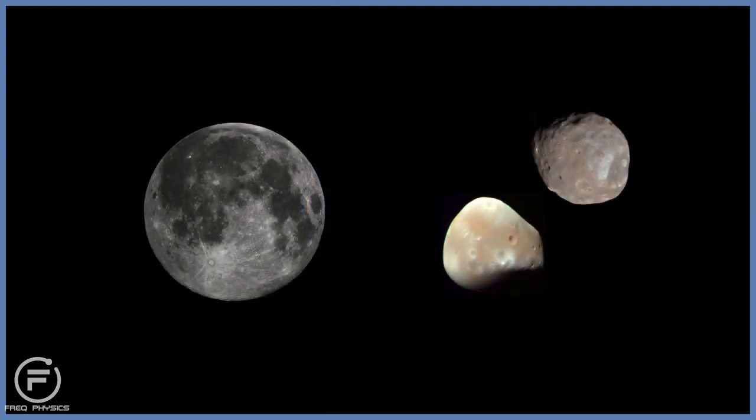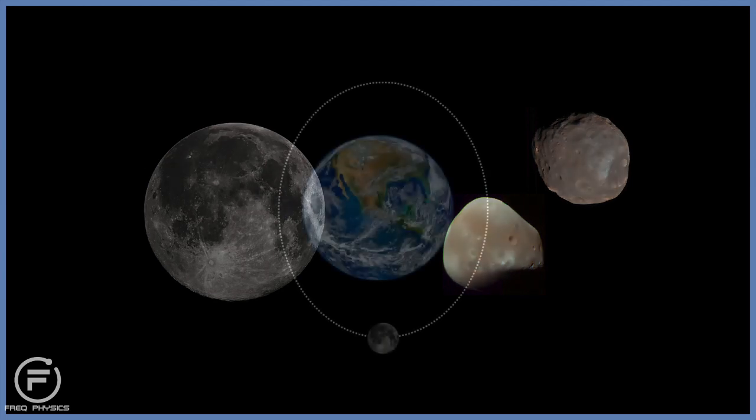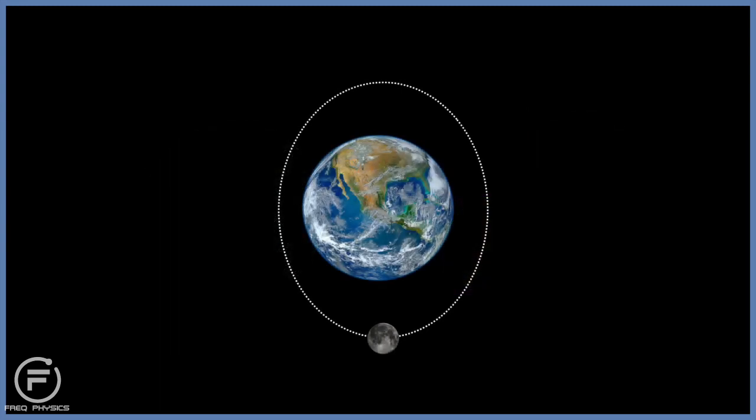However, looking at Mars' moons, we see that they're irregularly shaped, and the moon is rather large compared to its parent planet. In fact, the moon is the largest moon in the solar system compared to its parent planet.